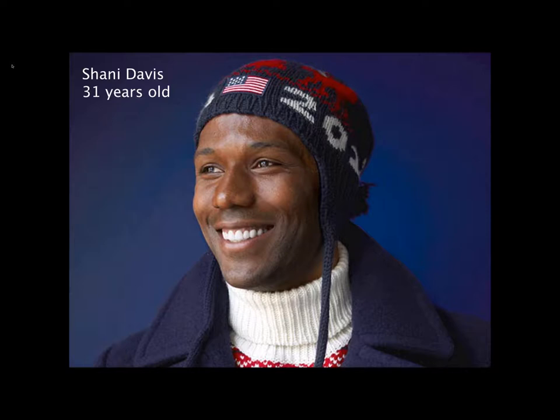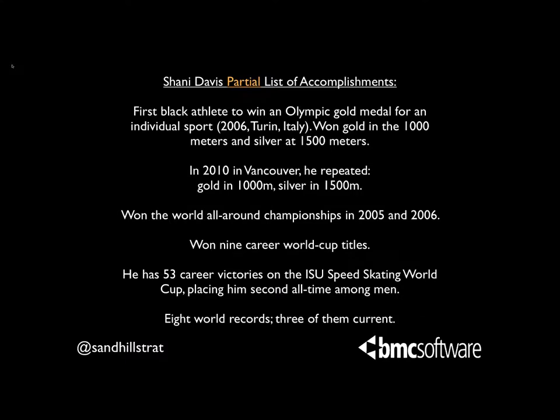Shani Davis is 31 years old and an amazing speed skater. He was the first Black athlete to win an Olympic gold medal for an individual sport. He won gold in the 1,000 meters and silver at 1,500 meters in Turin, Italy in 2006, and repeated that in 2010 in Vancouver. He's won the World All-Around Championships twice, nine World Cup titles, 53 career victories on the speed skating circuit, and holds eight world records — three of which were still current at the time of this presentation.